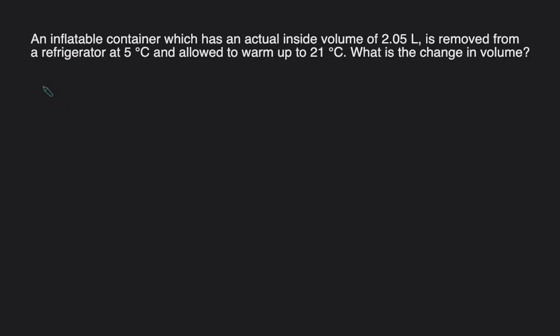Next question. Last question, an inflatable container which has an actual volume, so we're given a volume, it's removed from a refrigerator at 5 degrees Celsius. So we're given a temperature, and then allowed to warm up. We're given another temperature, and then we're asked to solve for volume. So we'll call this V1 and T1, and then we'll call this T2 and V2. So we can use the Charles' Law equation again. V1 over T1 equals V2 over T2.